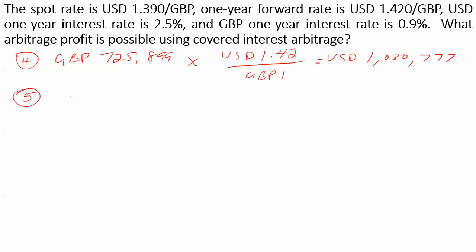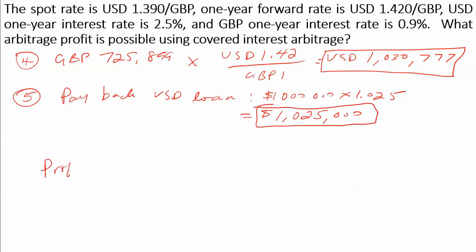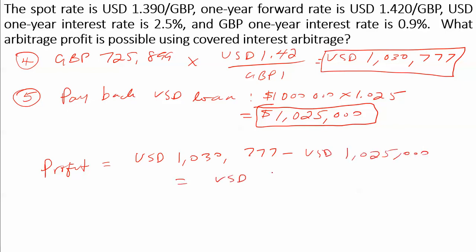Remember, we had borrowed the million dollars at 2.5% interest, so now it's time to pay back the US dollar loan, which is a million dollars times 1.025 — so $1,025,000. We can now compute our profit, which is the difference between what we receive after selling the pounds and what we owe on the loan, giving us $5,777 US dollars in arbitrage profit after one year.